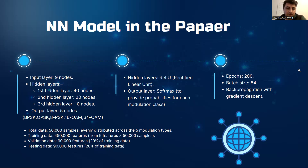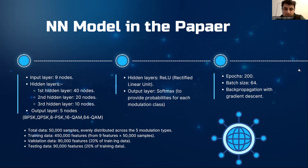The Rectified Linear Unit (ReLU) activation function is applied in the hidden layers to introduce non-linearity, and the softmax function is used in the output layer to assign probabilities to each modulation class. The model was trained using 50,000 samples evenly distributed across all five modulation types, with 450,000 total features — 90,000 features each for validation and testing.